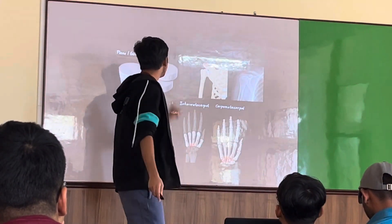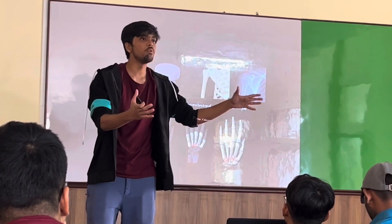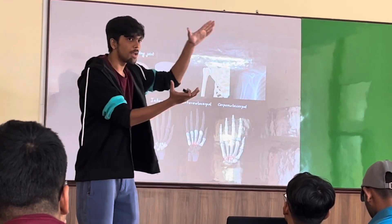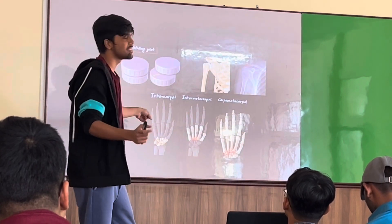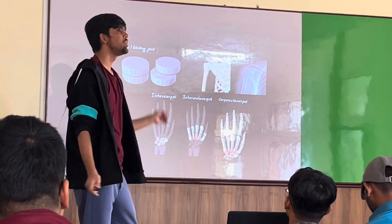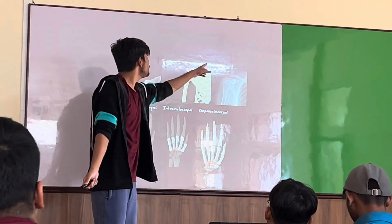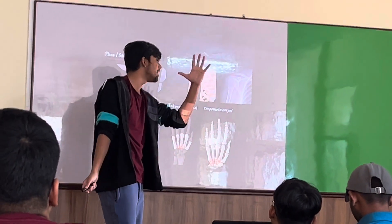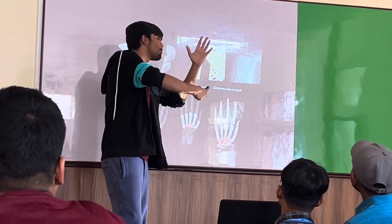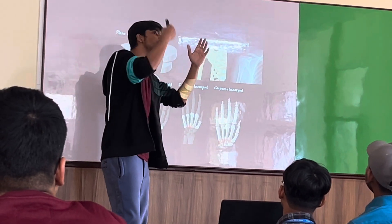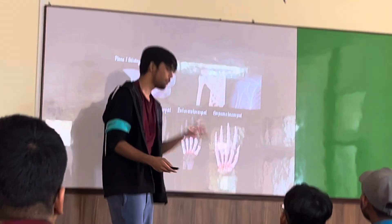First, we have the plane or gliding joint. As the name suggests, the articulating surfaces are flat and they glide over one another. There is no axis about which they move, so it is a non-axial joint. Examples include the acromioclavicular joint, the joints between the carpals within your hand, the joint between the carpal and metacarpal, the joints between the bases of the metacarpals, and the same applies for the bones of the foot.